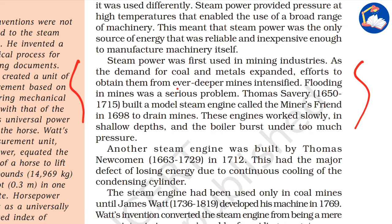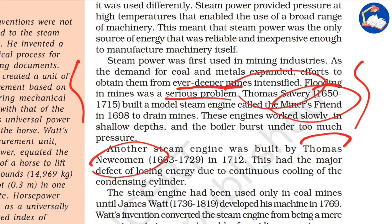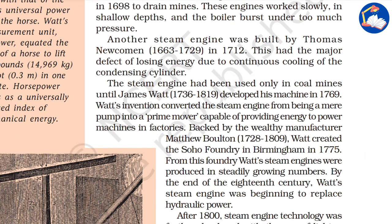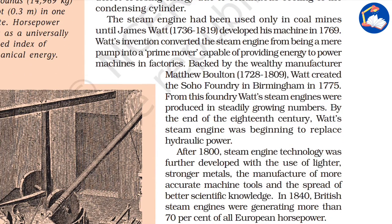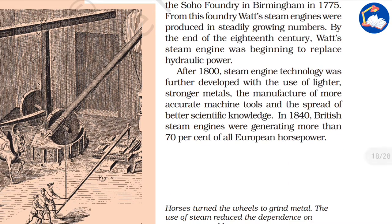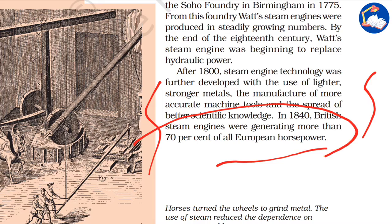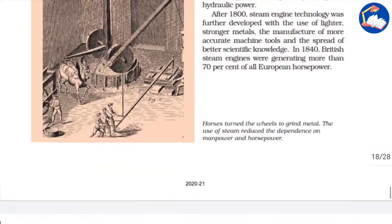Thomas Savery built a model of steam engine called the 'Miner's Friend,' but it was very slow. Another steam engine was built by Thomas Newcomen, but it also lost energy due to continuous cooling of the condensing cylinder. Then James Watt, backed by wealthy manufacturer Matthew Boulton, created a very effective steam engine. Watt's steam engines were produced in steadily growing numbers, and by the end of the 18th century began replacing hydraulic power. After 1800, steam engine technology was further developed with lighter, stronger metals, more accurate machine tools, and better scientific knowledge. By 1840, British steam engines were generating more than 70% of all European horsepower.